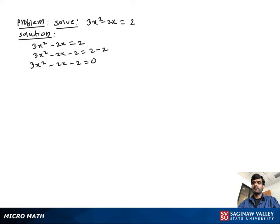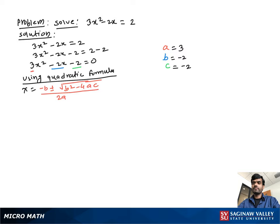Now it's in standard form of a quadratic equation. So we determine the values of a, b, and c: a equal to 3, b equal to negative 2, and c equal to negative 2.